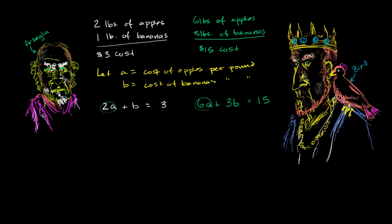So negative 3 times 2A is negative 6A. Negative 3 times B is negative 3B. And then negative 3 times 3 is negative 9. And now we can essentially add the two equations. Or add the left side of this equation to the left side of that, and the right side of this equation to the right side of that. We're essentially adding the same thing to both sides of this green equation because we know that this is equal to that. So let's do that.